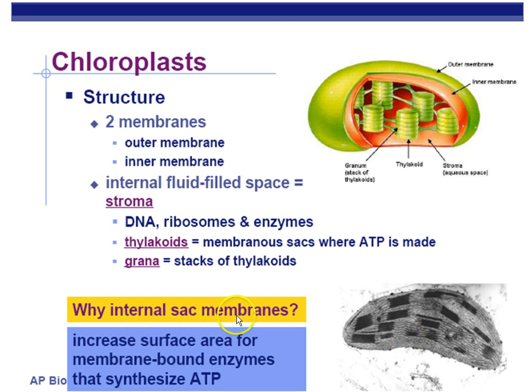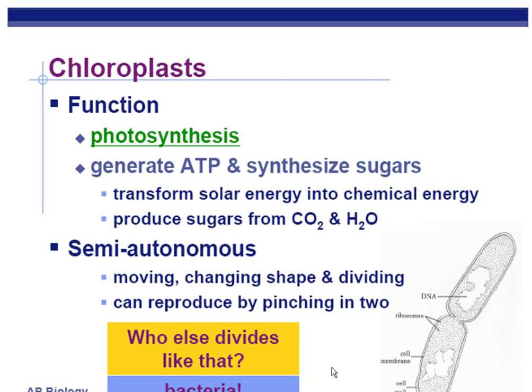We have these internal sac membranes to concentrate hydrogen ions — protons — in order to make ATP by chemiosmosis. The chloroplast's function is photosynthesis. We're going to be making ATP, and mostly that ATP is going to be used to drive the Calvin cycle to make sugars, transforming solar energy into chemical energy, producing sugar from carbon dioxide and water. These things are also semi-autonomous, like the mitochondria, and can reproduce by pinching in two.